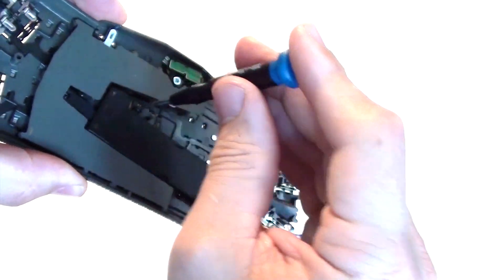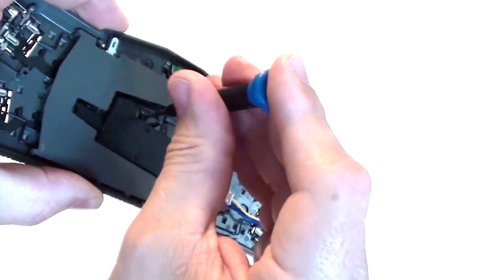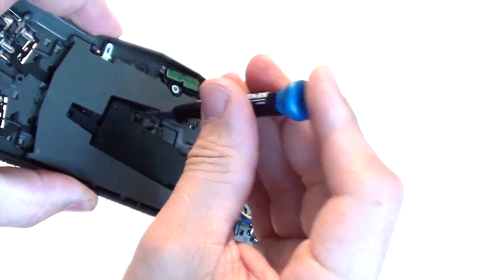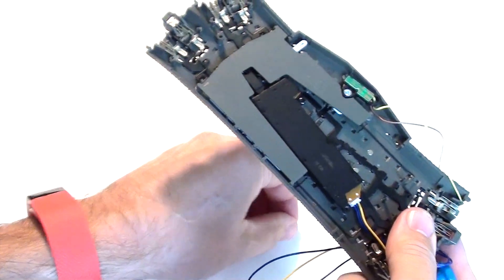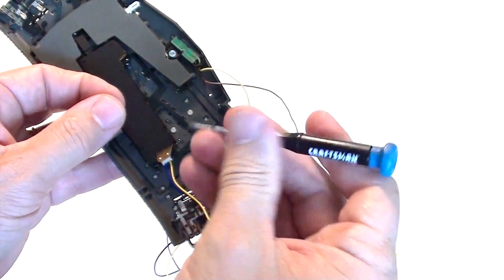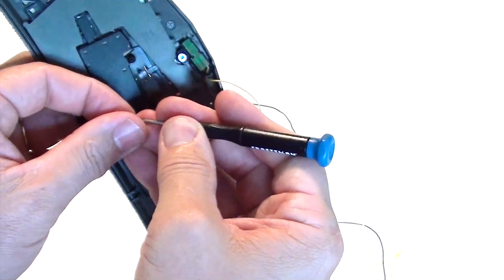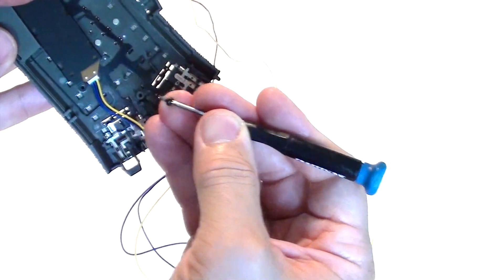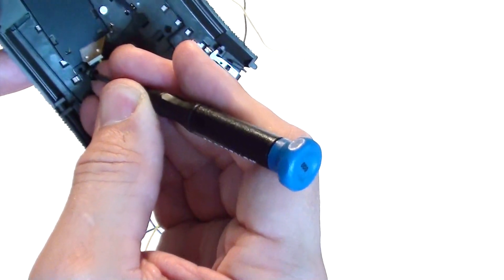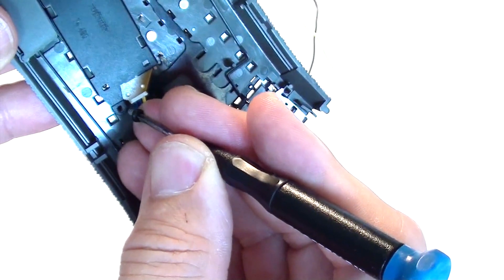The big light grey piece that you see covering the mechanism is a piece that you want to leave in place. If you pop that off, all kinds of little parts will fall out and it will become difficult to put the turnout back together. The good news is you do not have to remove it and you should not remove it.